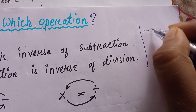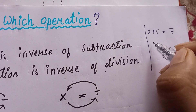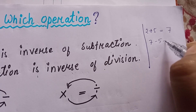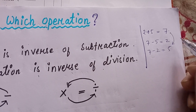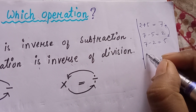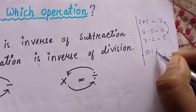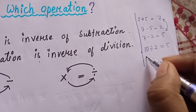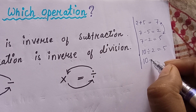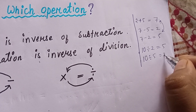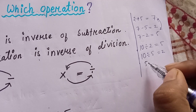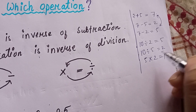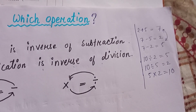For example, 2 plus 5 equals 7. It can also be written as 7 minus 5 equals 2, or 7 minus 2 equals 5 — they are opposite of each other. Same way, 10 divided by 2 equals 5, or 10 divided by 5 equals 2, and 5 times 2 is 10. This is how they are opposite to each other.